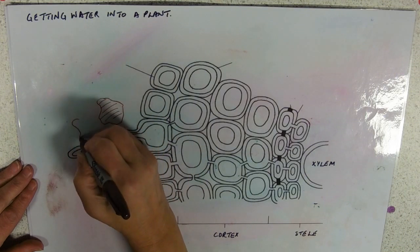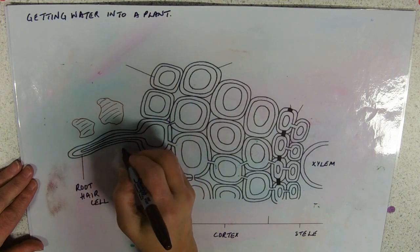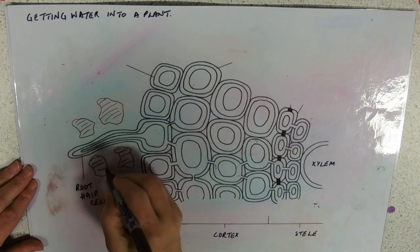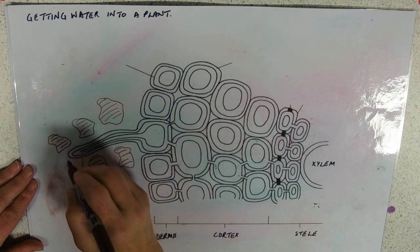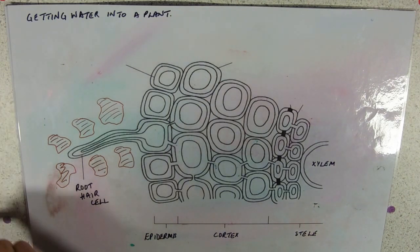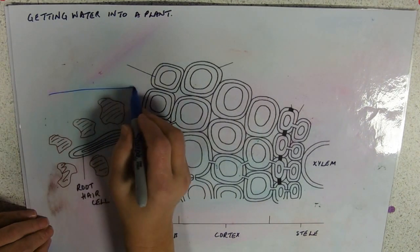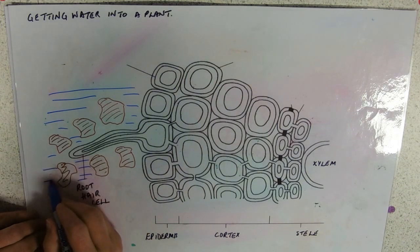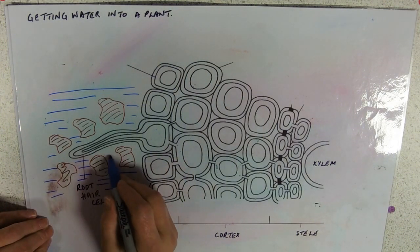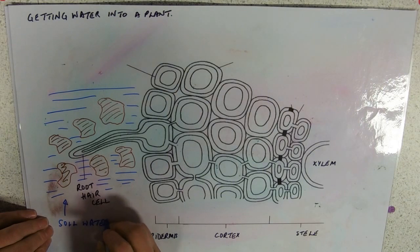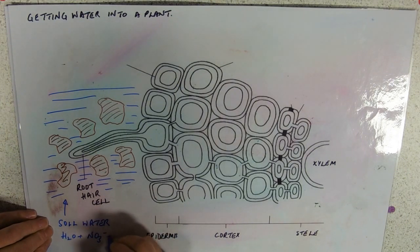So if we looked at soil close-up, we've got soil particles and in between the soil particles we've got water, and obviously it's not pure water. So soil water has water, mineral ions like nitrate and phosphate.